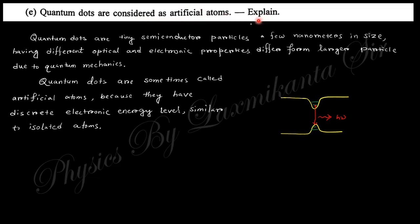Next question: Quantum dots are considered as artificial atoms - explain. Quantum dots are confined along three dimensions. If you consider three axes x, y, and z, any particle confined in all three directions, where the lengths a, b, c are all less than 100 nanometers, this is called a quantum dot.